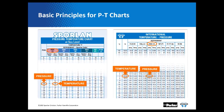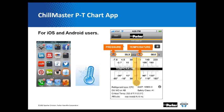For those of you who prefer digital tools, we have an app called Chill Master PT. You can find it on the App Store or Android store by searching Sporlan or Parker. It's loaded with virtually every refrigerant you commonly use, and you can look up pressure-temperature relationships. You can use either the scroller or plug in the pressure or temperature you're reading from your gauges, temperature probes, or smart service toolkit.